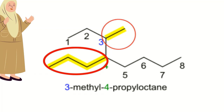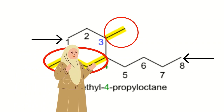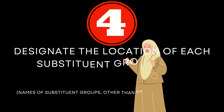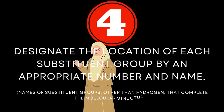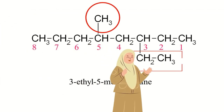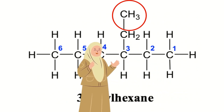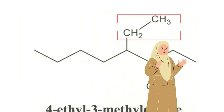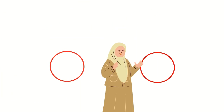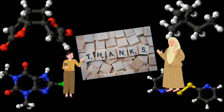Rule number four: designate the location of each substituent group by an appropriate number and name. Names of substituent groups other than hydrogen complete the molecular structure. Examples include: 3-ethyl-5-ethyloctane, 2-ethylhexane, 4-ethyl-3-methyloctane, and 2,7,8-trimethyldecane. Finally, use numerical prefixes to indicate the location and number of each functional group on the parent chain.